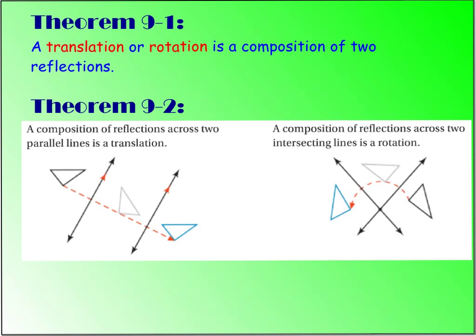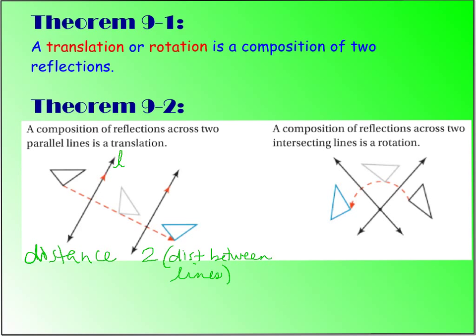This first slide explains how both translations and rotations are a composition of two reflections. The first case is if you reflect an object across two parallel lines. When that object flips twice, it's as if it's simply a translation. What's interesting is your distance will always be two times the distance between your lines. So if we call these lines L and M, the distance moved would be 2LM — whatever the distance is between those lines, the distance your original object moves will be 2 times that.